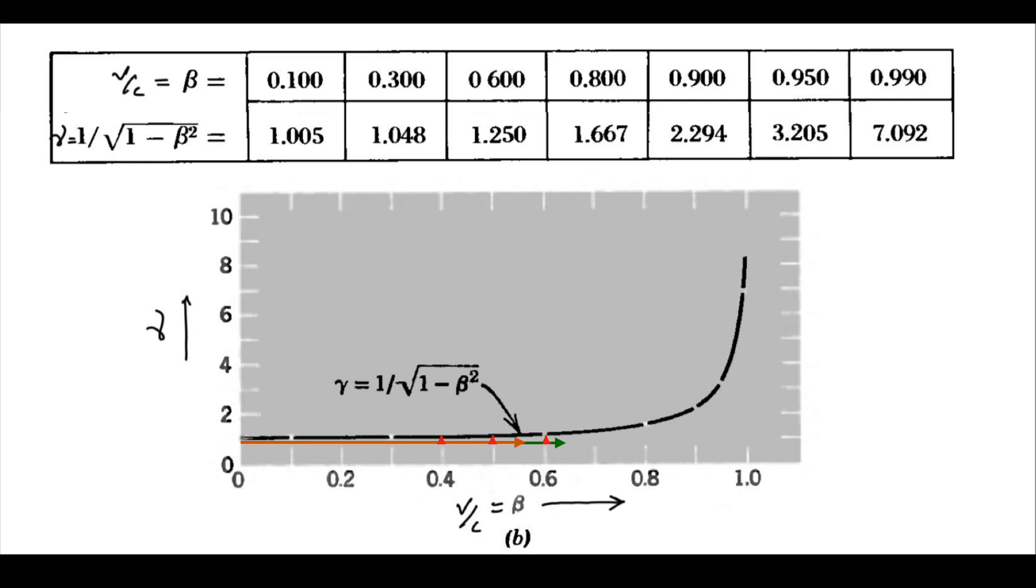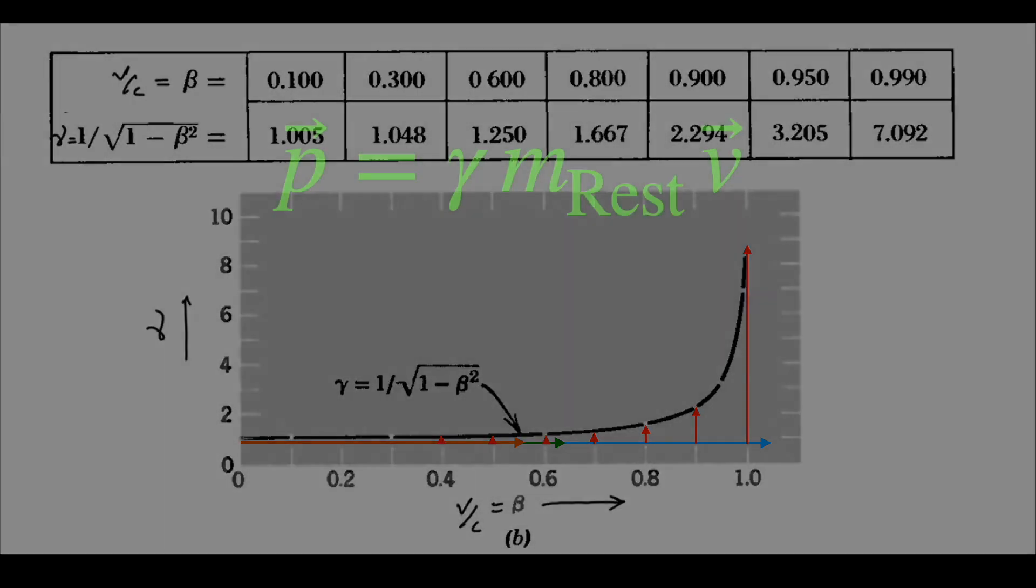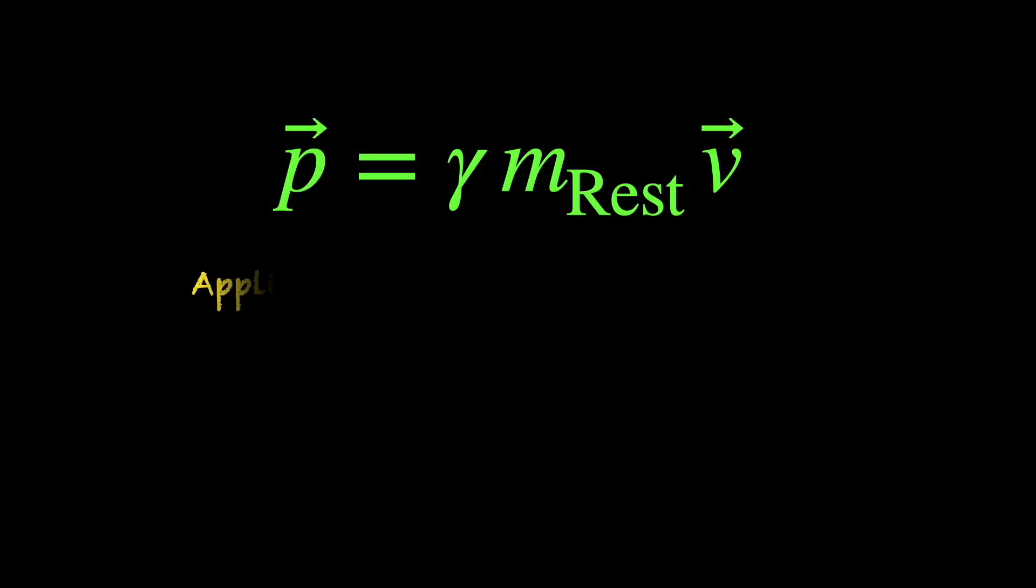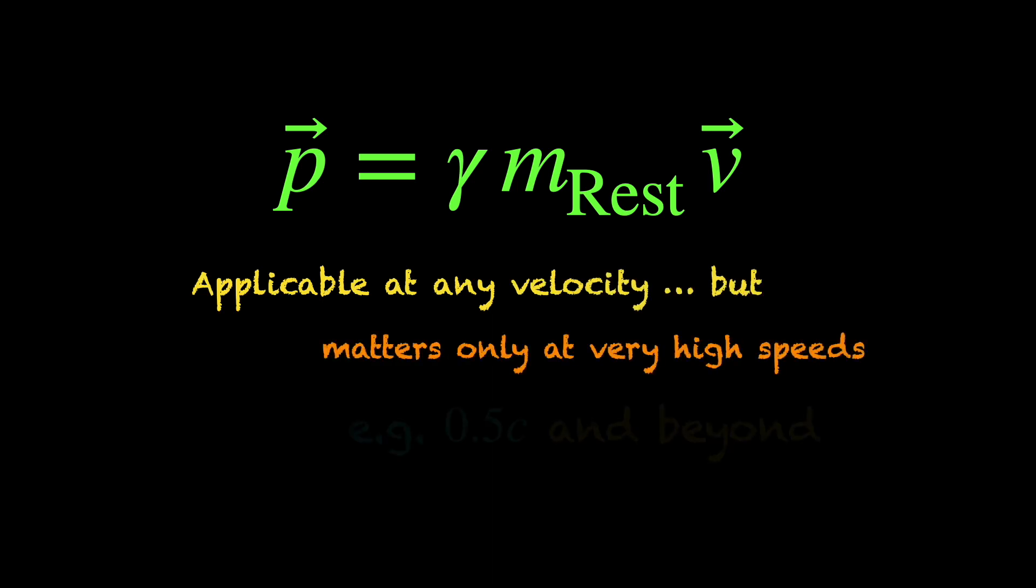Only beyond the 50-60% speed of light, gamma really starts to grow like crazy and rapidly diverges to infinity. So, you see, we can use the fully relativistic definition of momentum vector technically for all velocity values but it makes a difference only at very high velocities like half the speed of light and beyond.